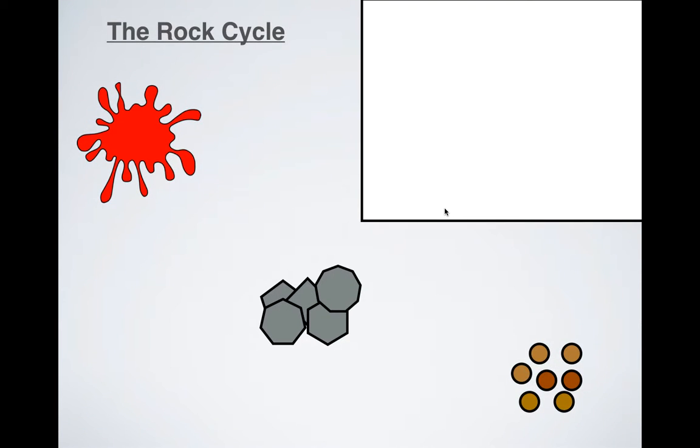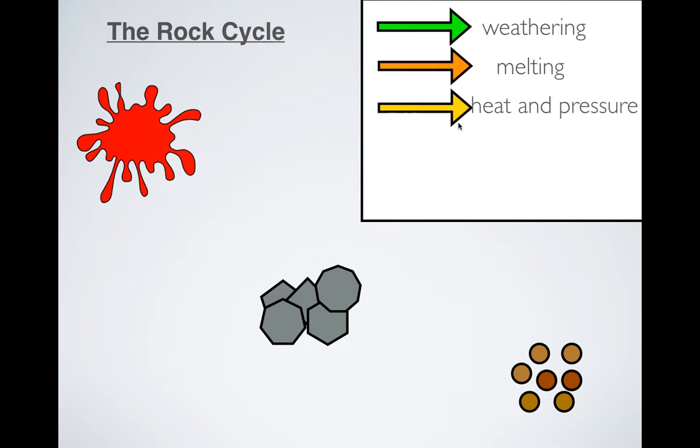Now, for the rock cycle, there are a lot of steps to it, but the first thing we need to do is we need to color code our key. I'm going to use green to represent weathering, orange to represent melting, heat and pressure will be yellow, cementation will be purple, and then cooling will be blue.